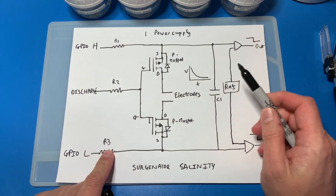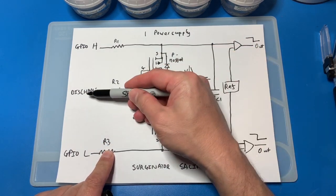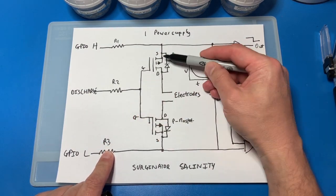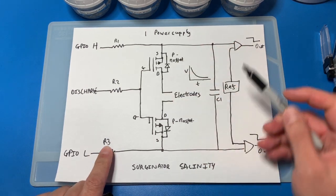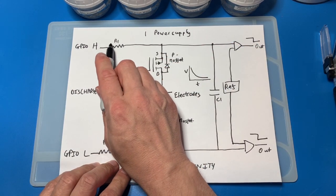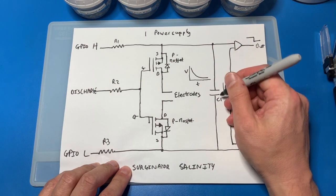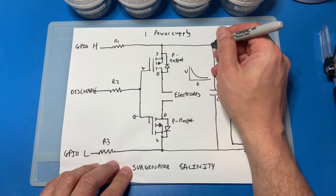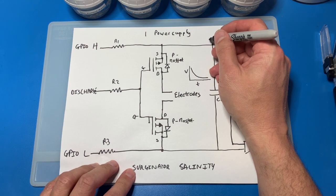When that one's high and that one's low and this is held high, so this part is switched off, then essentially the current is going through to the capacitor and gradually charging that up until it reaches the same voltage as the supply.